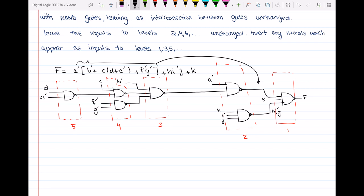But we're still not finished. So we have to leave all the interconnections between gates unchanged. As an example, an interconnection between gates are, for example, this one. This is an interconnection. So this is what we call an interconnection between two gates.